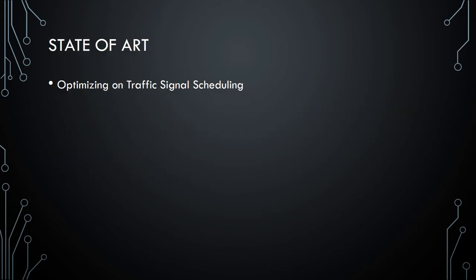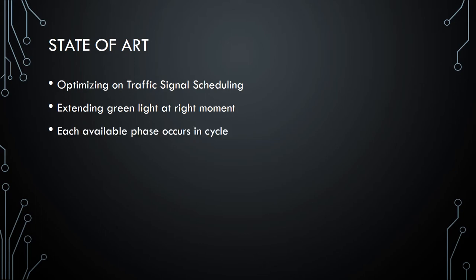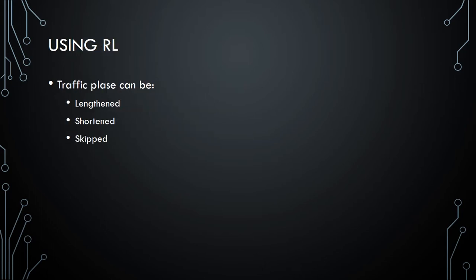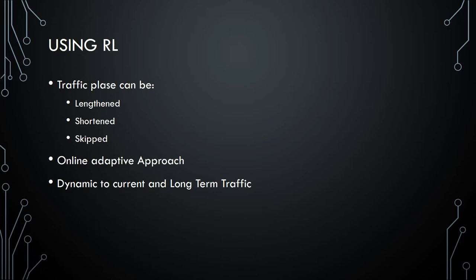The current state of the art optimizes on traffic signal scheduling. It extends the green light at the right moment and each available phase occurs in a cycle. Using reinforcement learning, the traffic phase can be lengthened, shortened or even skipped altogether. It is an online adaptive approach and it is dynamic to current and long-term traffic.